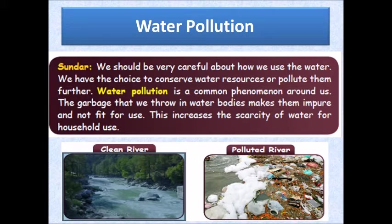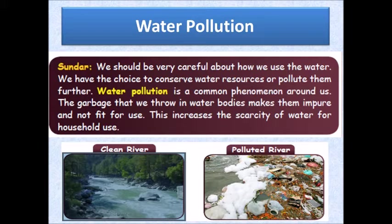Once the water becomes dirty and impure, we cannot use it for any household purposes like cleaning, washing, or bathing, and that will increase the scarcity — that is a shortage — of water. You can see how clean a river looks on one side, and on the other side a polluted river where garbage and chemical waste have been dumped, making it very polluted.